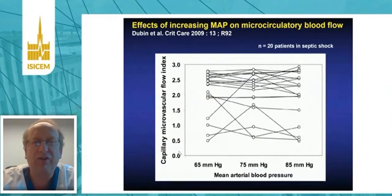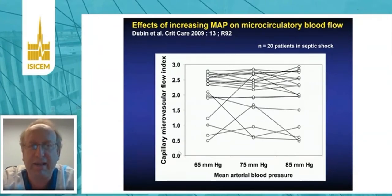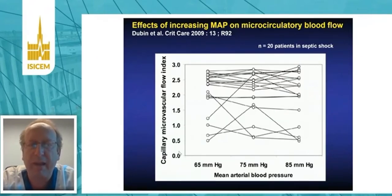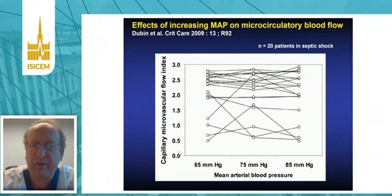Another illustration of the concept of loss of hemodynamic coherence is provided by Dubin and co-workers. The idea was to try to improve tissue perfusion by increasing mean arterial pressure by giving more norepinephrine. Again, in the vast majority of those patients there was no change in tissue perfusion. In some patients there was an improvement, but in others there was deterioration of tissue perfusion.